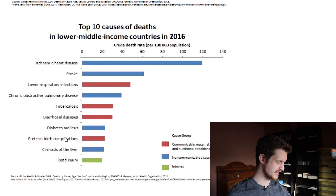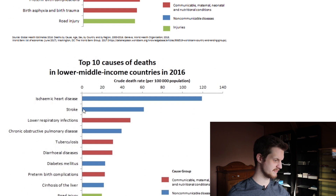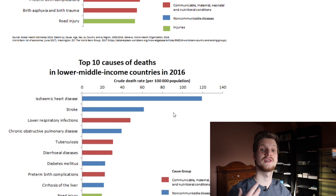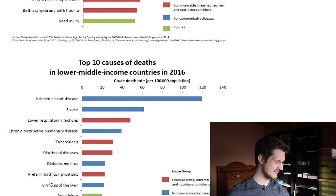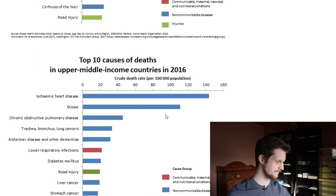Looking at lower-middle income countries, we see that ischemic heart disease is now at the top — it's not at the top in low-income countries, but as soon as we get to lower-middle income countries, ischemic heart disease is number one and it stays there. This is due to our lifestyle of eating — feasting, really. Pre-term birth complications are still up there, but otherwise it looks somewhat similar to the global picture.